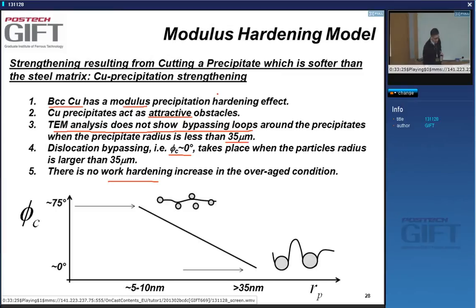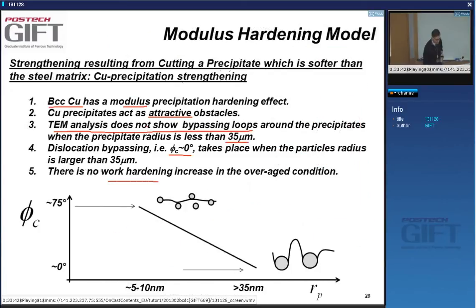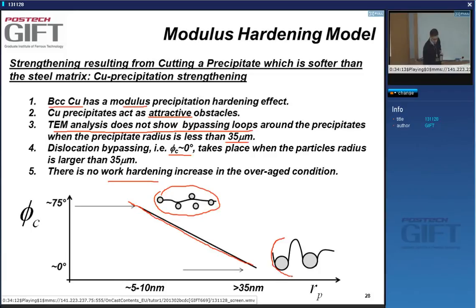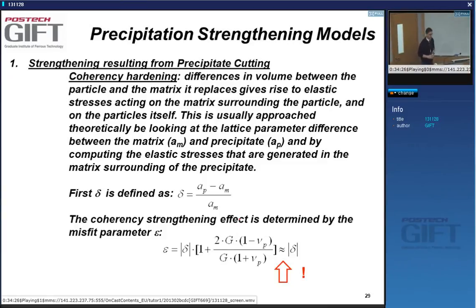As the particle becomes coarser, the critical angle decreases and I go from particle cutting eventually to particle bypassing — but only after 35 nanometers, long after the peak strength. There is also no work hardening in the overaged condition, meaning dislocations are not accumulating.